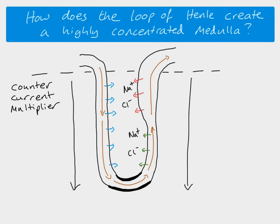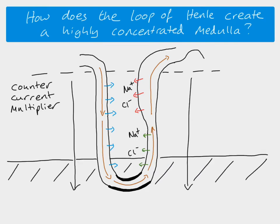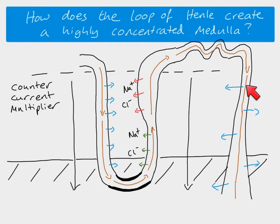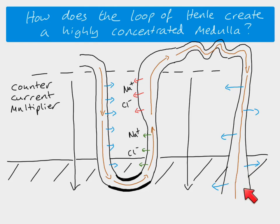This therefore leads to the whole point of our loop of Henle: when filtrate moves down the collecting duct, the whole way down the concentration of the tissue fluid around it is getting more and more concentrated, so water leaves. The water potential of the filtrate decreases, but because the concentration of the tissue fluid is also increasing along the gradient, water can still move out all the way down. So what we end up with, as we said right at the beginning, is highly concentrated urine. And that's how the loop of Henle works. Thanks.